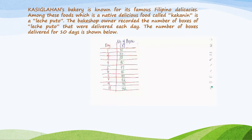To illustrate this, let's have this example. Kasiglahan's bakery is known for its famous Filipino delicacies. Among these foods, which is a native delicious food called kakanin, which is a lecheputo. The shop owner recorded the number of boxes of lecheputo that were delivered each day. The number of boxes delivered for 10 days is shown below.